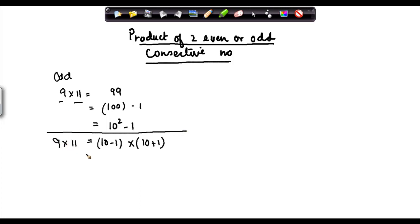You can also write this as, now if you multiply this: 10 into 10 will give you 10 square, 10 into 1 will give you plus 10, minus 1 into 10 will give you minus 10, and this will give you minus 1 into minus 1. This also comes down as 10 square minus 1.